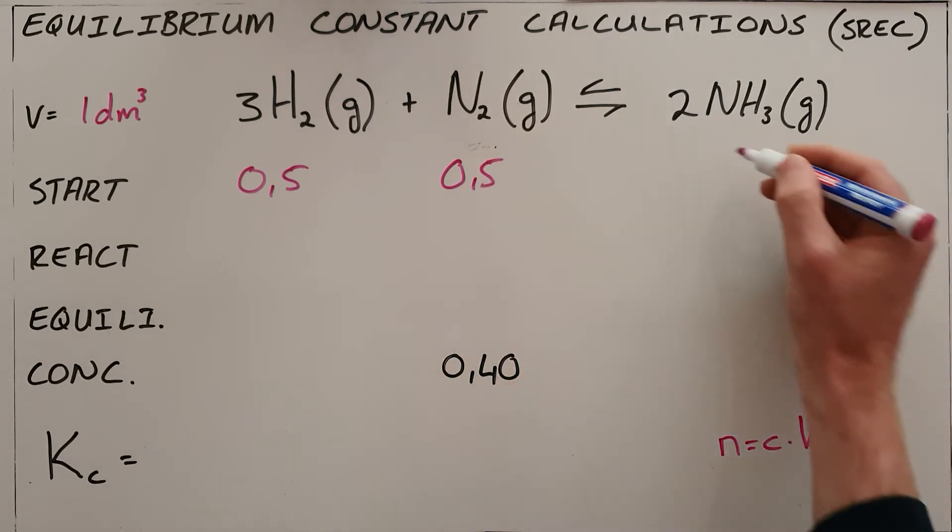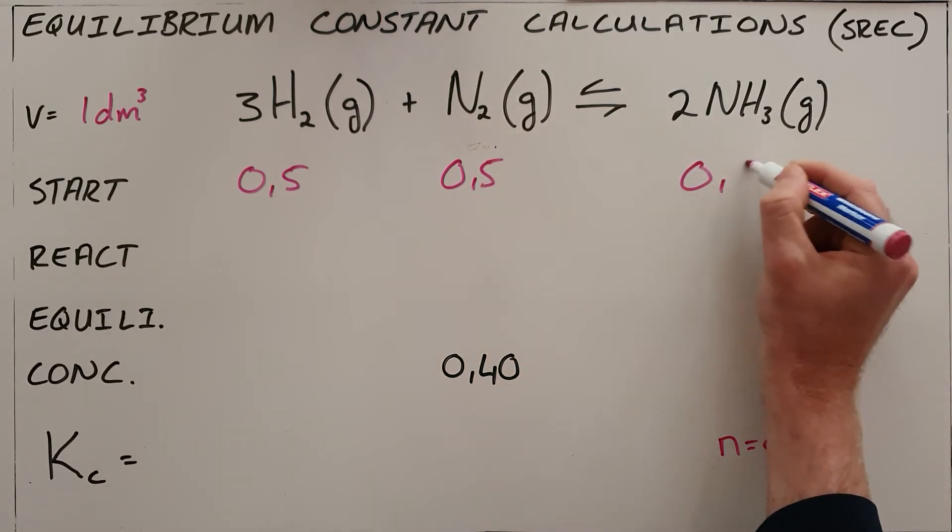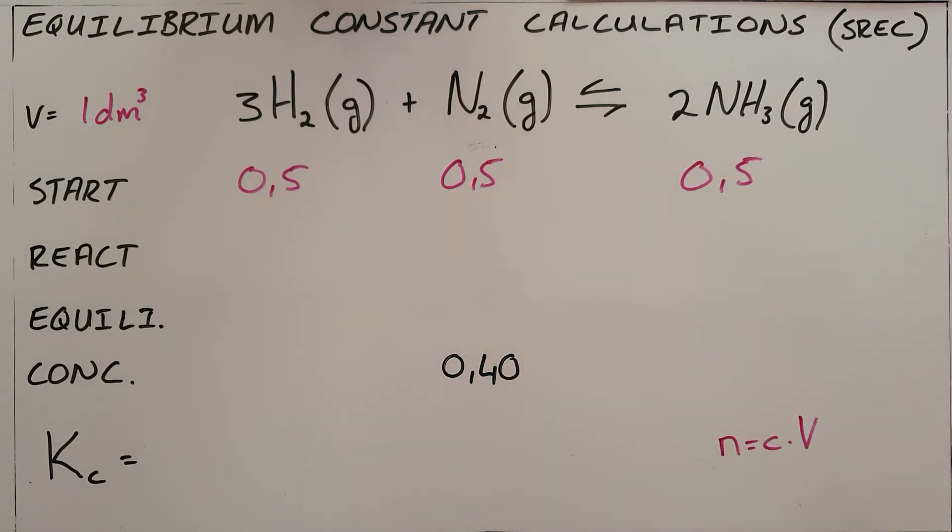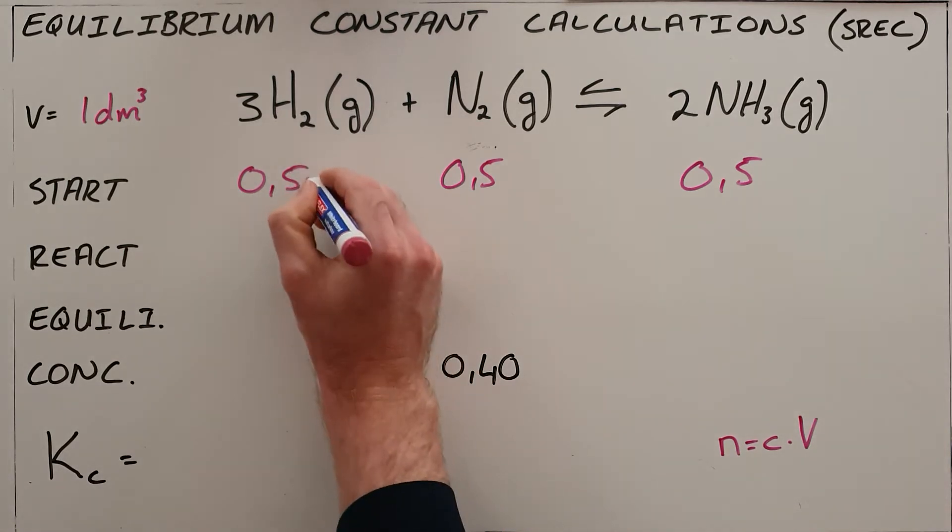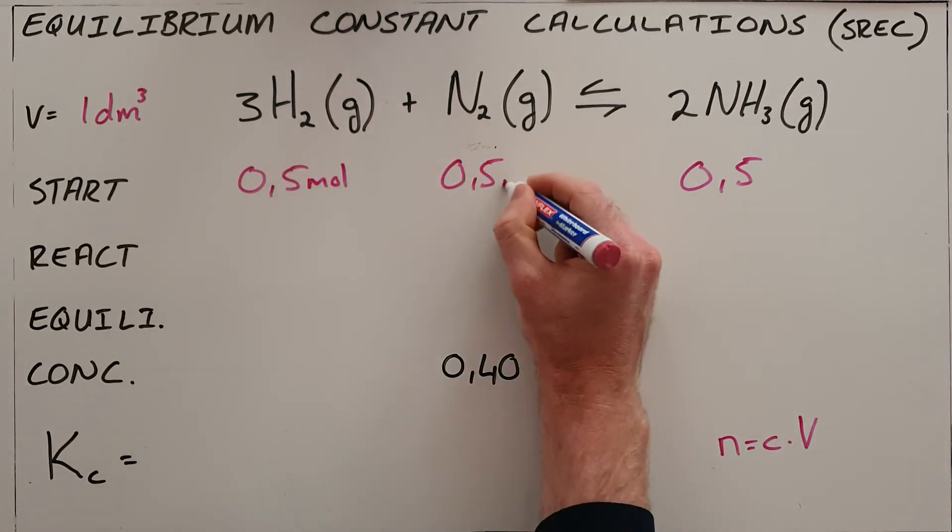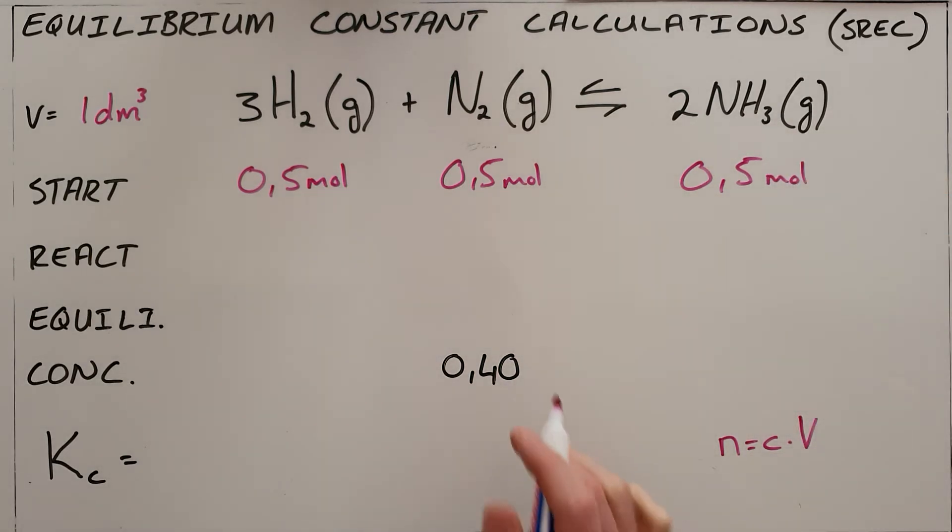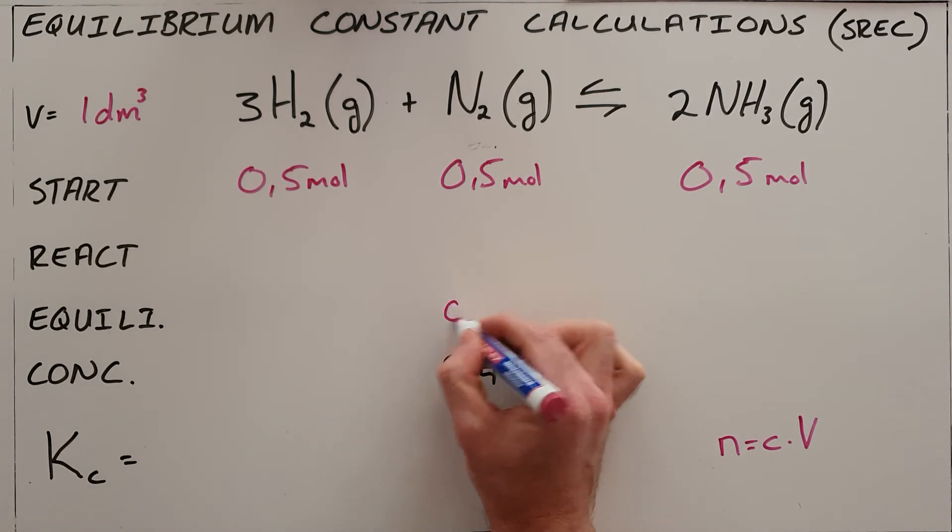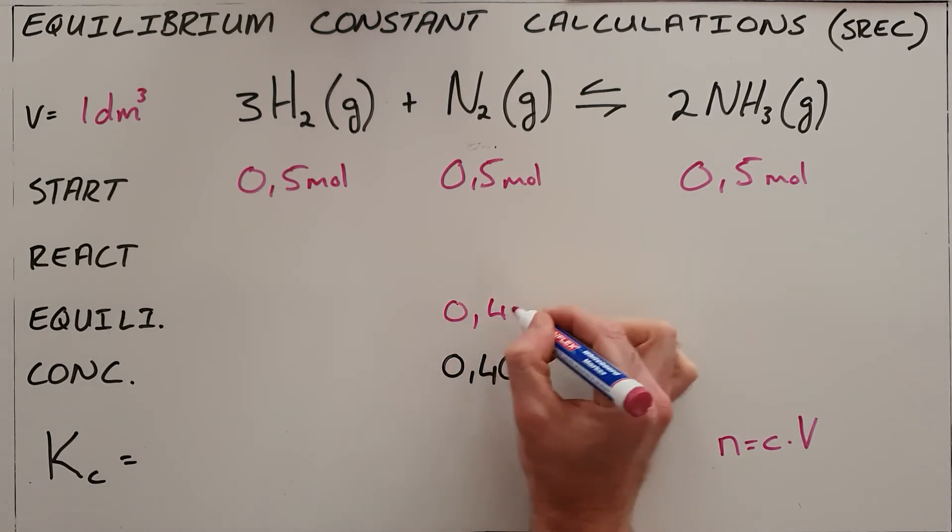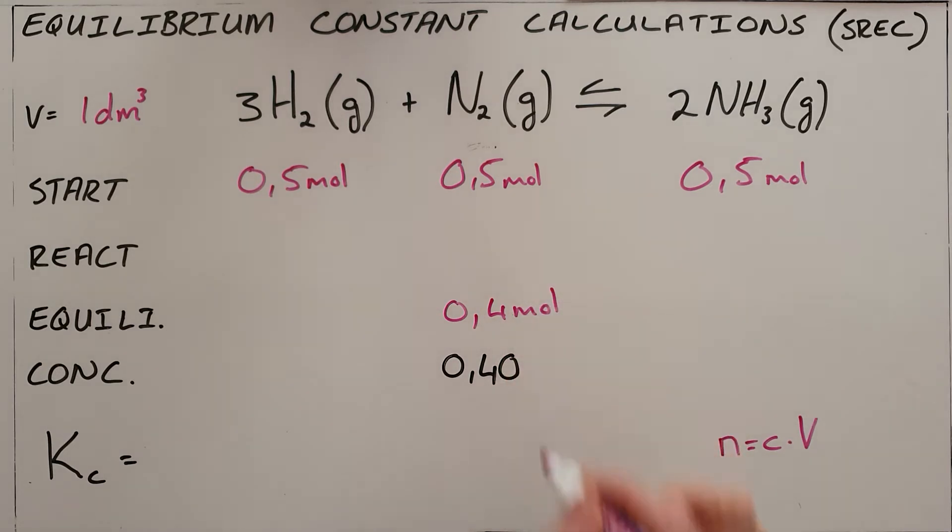So what this question has told us is it says that at the start, 0.5 moles of each of these reagents is added to a closed or sealed container. They then go on to say that at equilibrium, it is found that the concentration of nitrogen is 0.4 molar. Again, we can immediately convert that to a number of moles at equilibrium, which is obviously then also 0.4 moles.